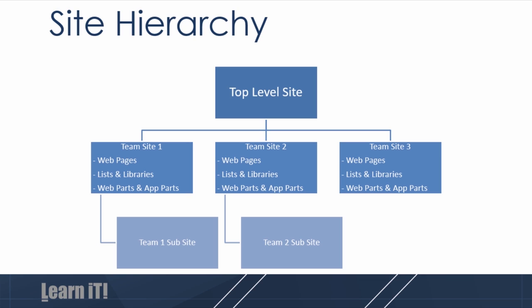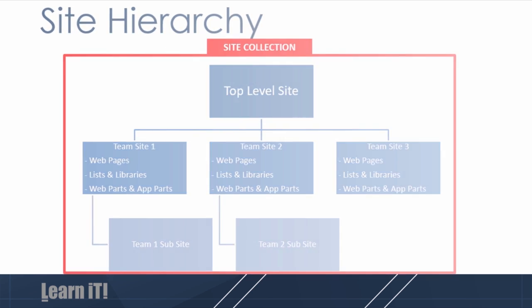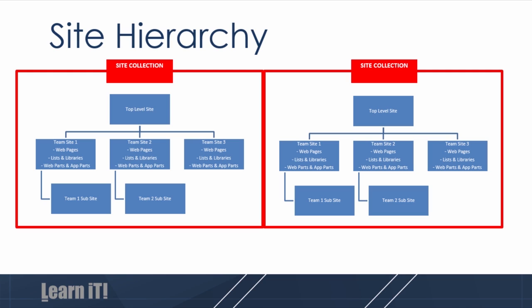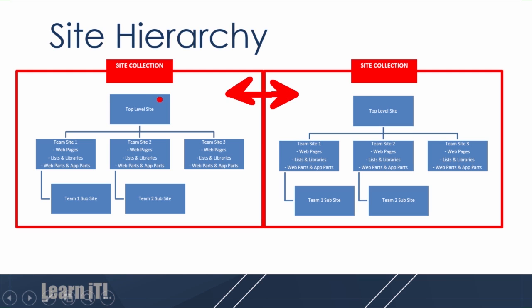All of these components — the top-level site, the team site, the sub-site — can be contained within what's called a site collection, which is the larger box within a box. Organizations can have as many site collections as they need. Site collections can have their own top-level sites with their own sub-sites within that. The biggest difference between site collections is permissions: while permissions are generally shared from the top-level site down, they are not shared between site collections. They're essentially firewalled from each other, allowing each environment to operate autonomously.